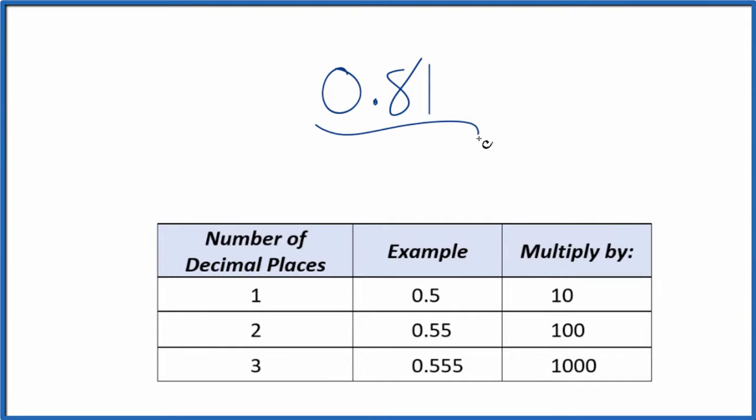Let's write the decimal 0.81 as a fraction. So let's call it 0.81 over 1. It's still 0.81. We're just dividing by 1. But now we have the start of a fraction.